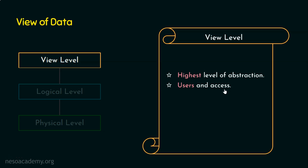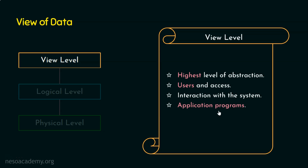The view level is where the user interacts with the system, through interfaces such as a web interface or mobile interface — simply a GUI, the graphical user interface. This level also interacts with the next level, the logical level, where application programs are written. As mentioned, multiple views exist at this level, and we need to focus on the security of those multiple views.